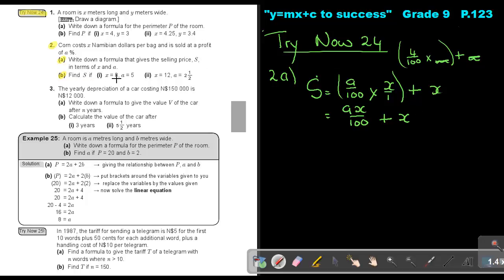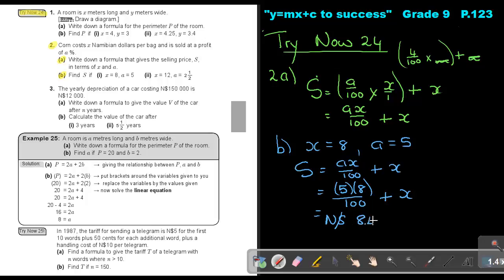Find S if X is 8 and A is 5. So S equals AX over 100 plus X. That will be 5 times 8 over 100 and I add X which is 8, and that will give me an answer of 8.40 Namibian dollars.